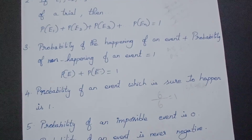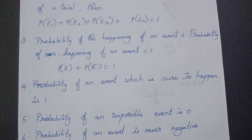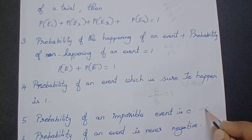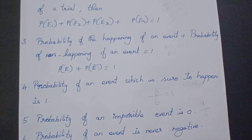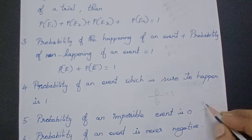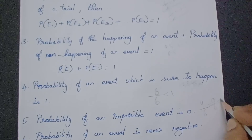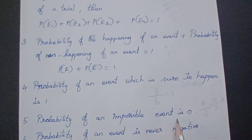The probability of an impossible event is 0. For example, if you roll a die and want to get a 9 — it is not possible. 9 will never come. So 0 out of 6, which equals 0. The probability of an impossible event is 0.